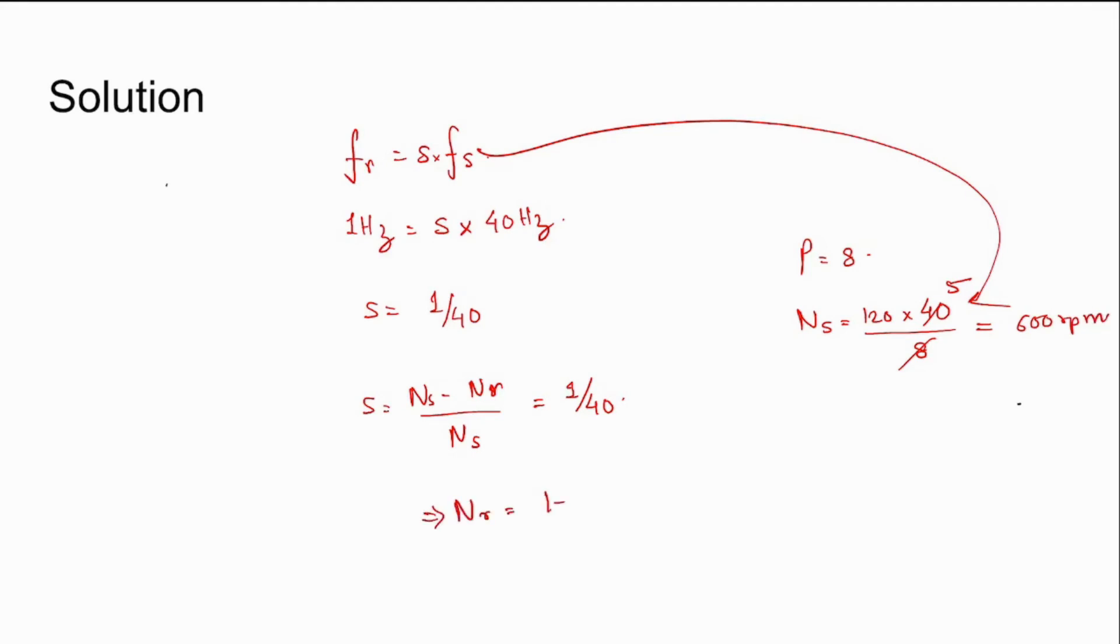Therefore, Nr equals (1 minus s) times Ns, which is equal to (1 minus 1 by 40) multiplied by 600 rpm.